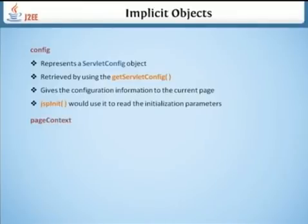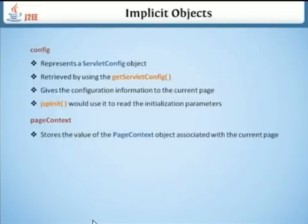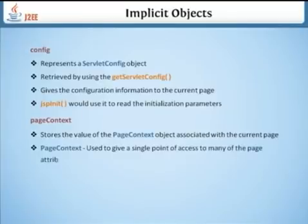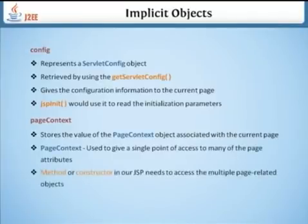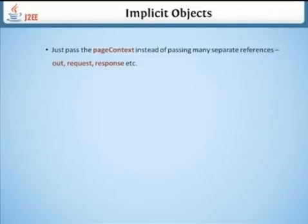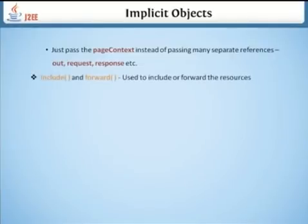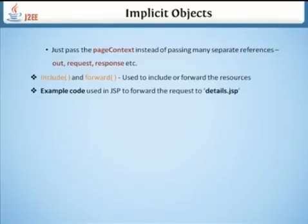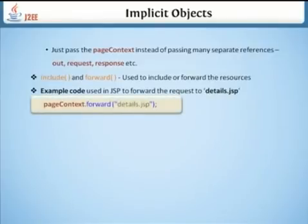Next is PageContext. It stores values in the page context object associated with the current page. PageContext provides a single point of access to many page-related objects. Methods constructed in the JSP need to access multiple page-related references — just pass the pageContext instead of passing many separate references like out, request, response, etc. It is also used to include and forward resources. Example code uses JSP to forward the request to the detail.jsp page.